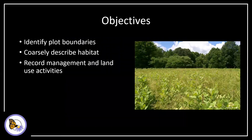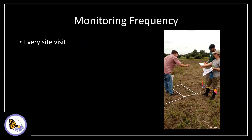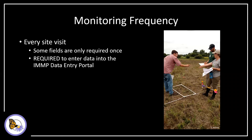This activity records the plot boundaries. It also coarsely describes certain habitat attributes and records management and land use activities. The site description is conducted every time the site is monitored. The first visit records some extra information, and after that, only a portion of the data sheet is filled out. It's important to fill out the site description every time you monitor the site so you can accurately track changes, such as changes in coarse vegetation cover or disturbances such as mowing. Additionally, you can't enter data into the IMMP portal until the site description is entered for that day.